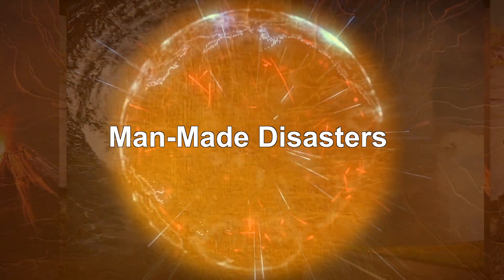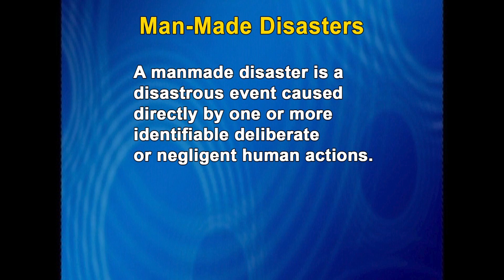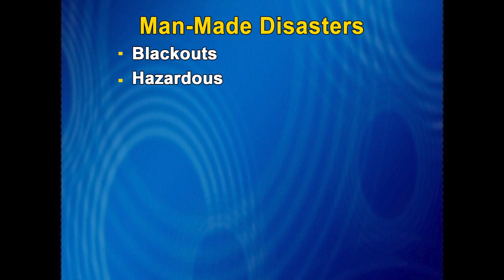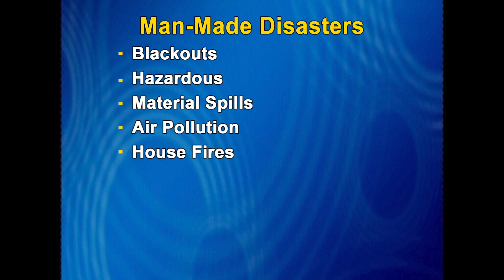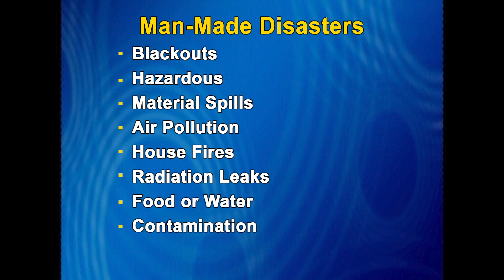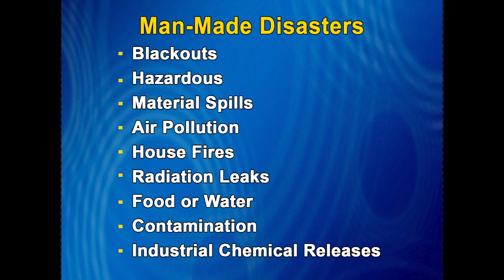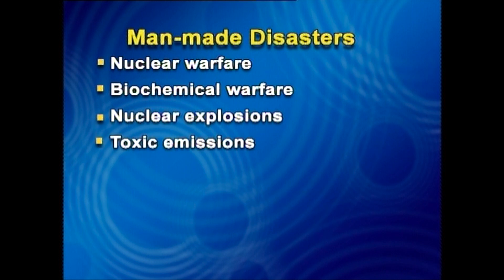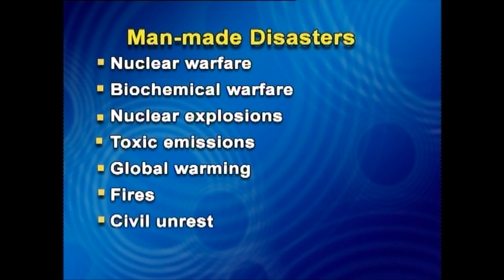Man-made Disasters. A man-made disaster is a disaster event caused directly by one or more identifiable, deliberate or negligent human actions. Man-made disasters are usually the result of things going wrong in our complex technological society. They include blackouts, hazardous material spills, air pollution, house fires, radiation leaks, food or water contamination, and industrial chemical releases. Examples resulting from human negligence, error, or intent include nuclear warfare, biochemical warfare, nuclear explosions, toxic emissions, global warming, fires, civil unrest, and terrorism.